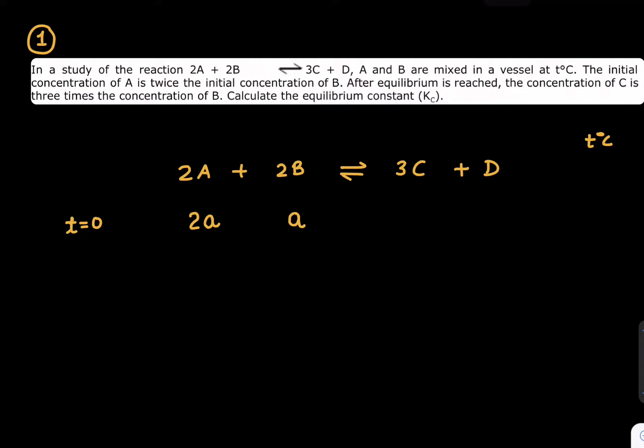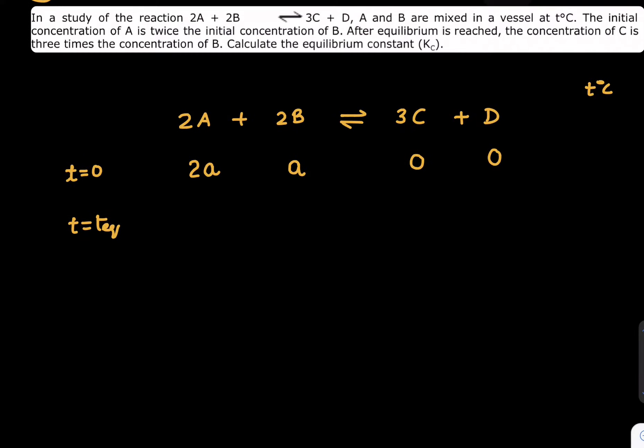After equilibrium is reached, initially it is 0, 0. At t = equilibrium, the concentration of C is three times the concentration of B. So remember, you will write the balanced equation as 2a - 2x because loss of 2 here means loss of 2 there. If 2 goes here, 2 should go here, hence if 2x goes here, 2x should go here.